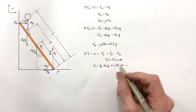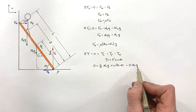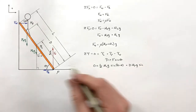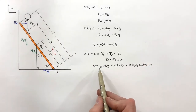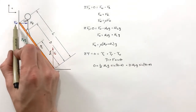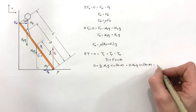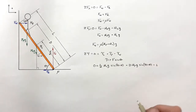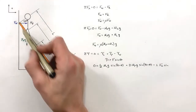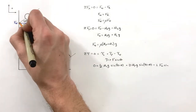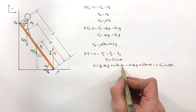For the torque by the wall force: the radius is l (the full length of the ladder), the force is fw, and the angle between the force by the wall and the ladder itself is theta — because if the ladder makes angle theta with the ground, that same angle appears between the wall force and the ladder. So the wall torque term is negative l times fw times sine of theta.